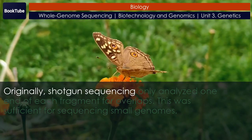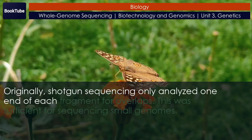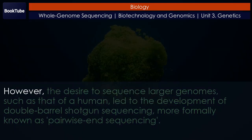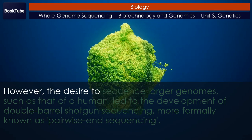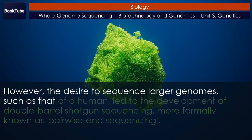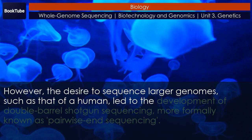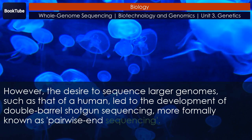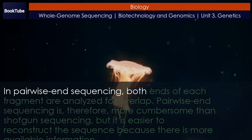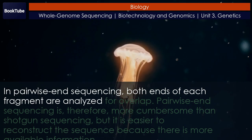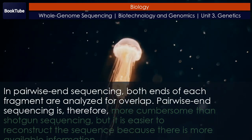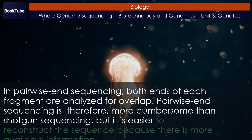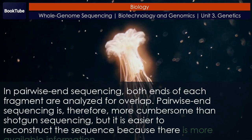Originally, shotgun sequencing only analyzed one end of each fragment for overlaps. This was sufficient for sequencing small genomes. However, the desire to sequence larger genomes, such as that of a human, led to the development of double-barrel shotgun sequencing, more formally known as pairwise end sequencing. In pairwise end sequencing, both ends of each fragment are analyzed for overlap. Pairwise end sequencing is therefore more cumbersome than shotgun sequencing, but it is easier to reconstruct the sequence because there is more available information.